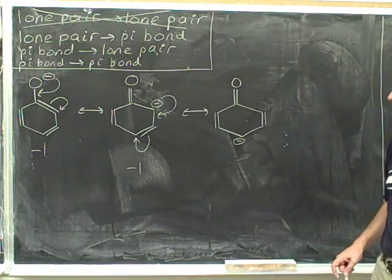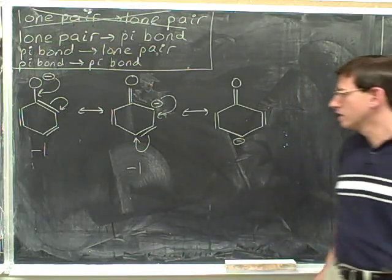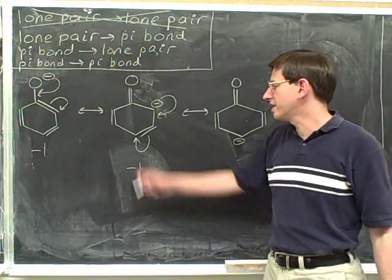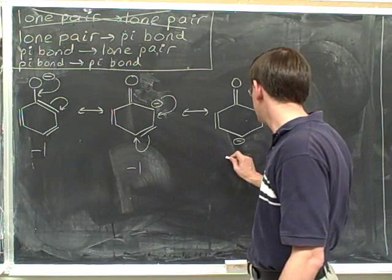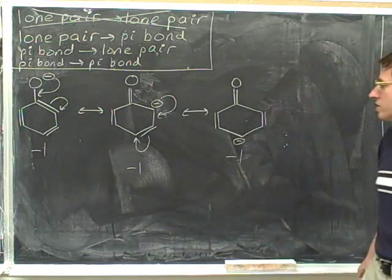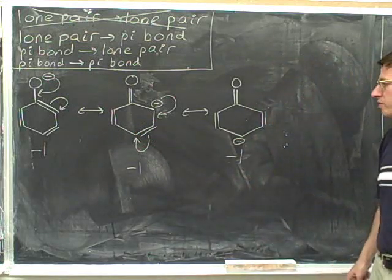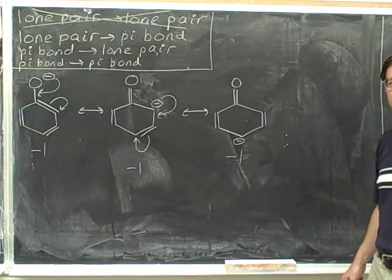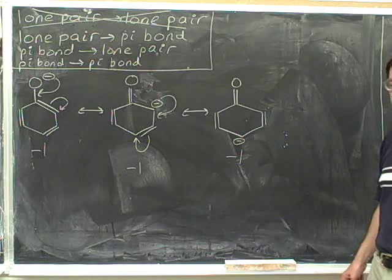Now we check that the charge is balanced. We already decided that this picture had a negative one formal charge. And we can see that this picture also has a negative one formal charge. The charge is still balanced.